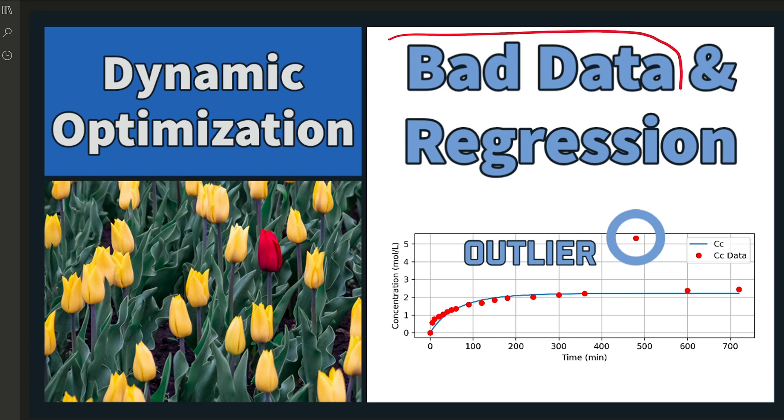Bad data is present in almost every data set that comes from physical measurements. With regression, we want to be able to remove those data points if possible, such as outliers. But if we can't remove them, what can we do in terms of the objective function of our regression to minimize the effect of outliers?